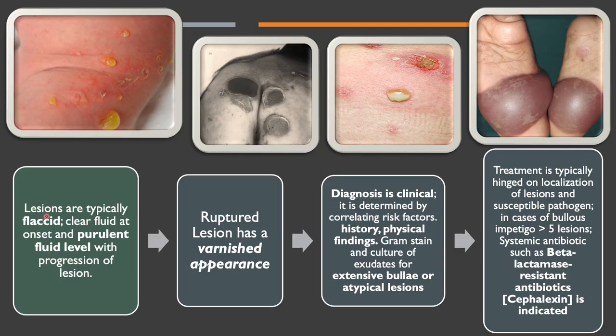Impetigo lesions are typically flaccid, clear fluid on onset, and purulent fluid level with progression of the lesion. Ruptured lesions have a varnished appearance.